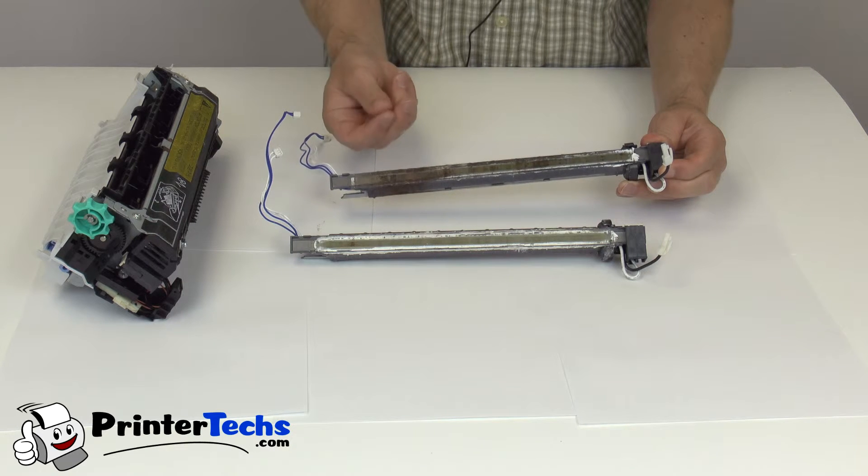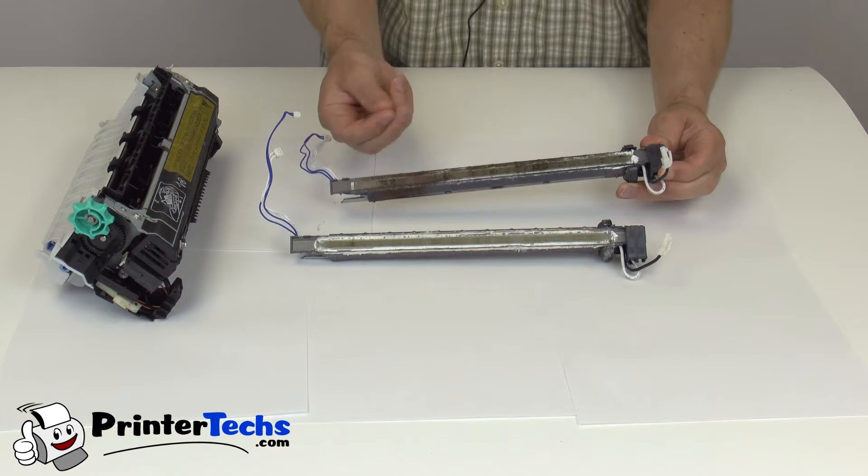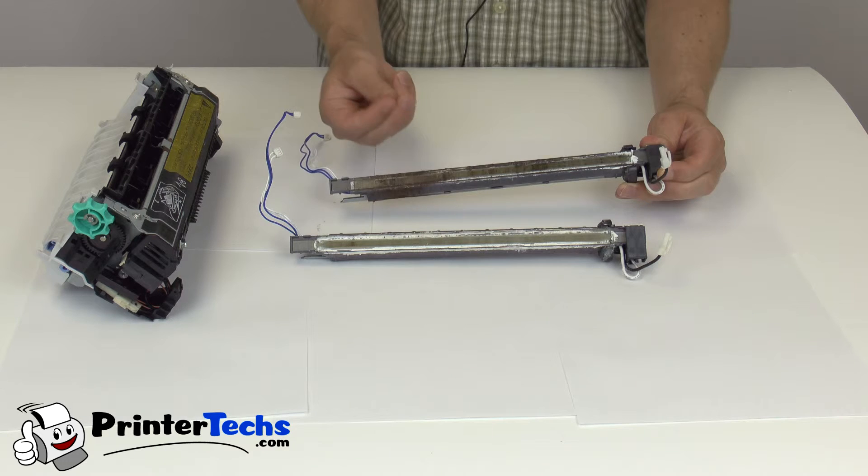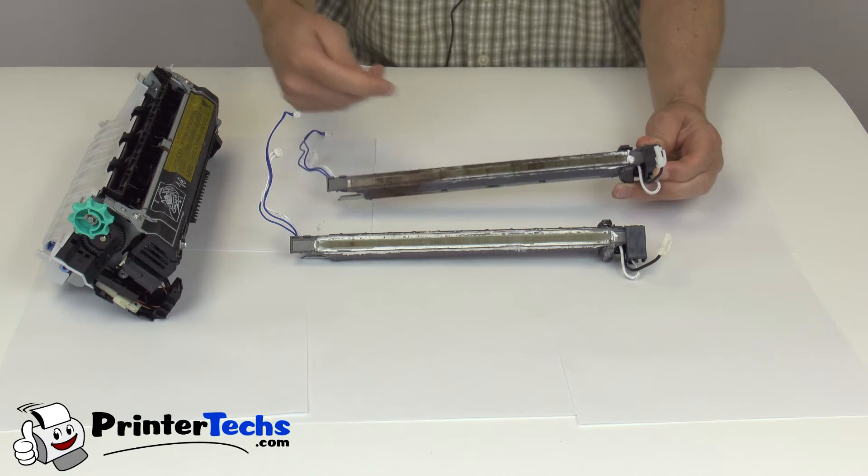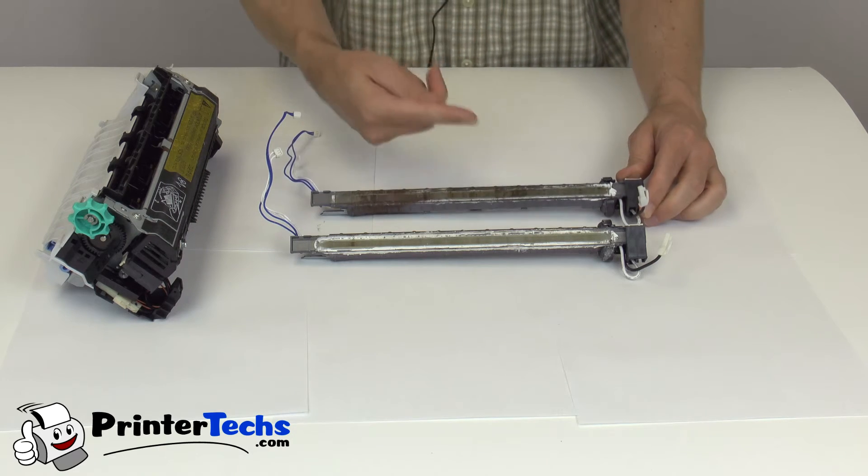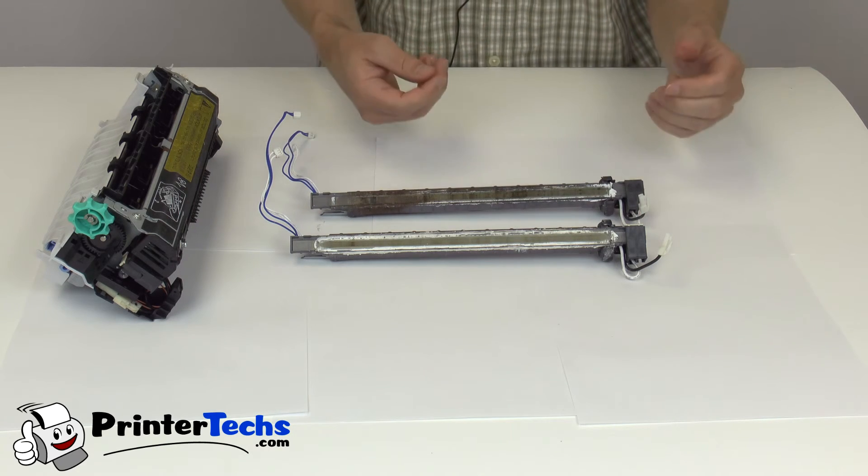And if you're able to touch this stuff, it feels kind of like an abrasive rust texture. That's not good because that will cause the sleeve to stop rotating freely around the heating element, and it causes paper jams.